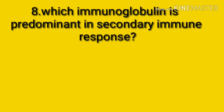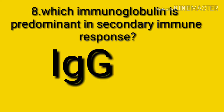Question number eight: which immunoglobulin is predominant in the secondary immune response? The answer is immunoglobulin G. IgG antibodies are dominant in the secondary immune response, whereas IgM is responsible for the primary response. The secondary immune response occurs the second time a person is exposed to the same antigen, at which point immunological memory has been established and the immune system can start making antibodies immediately.